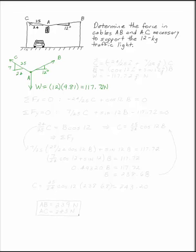In this case, we know all of the angles, so we can jump right into writing each of our forces in Cartesian form. The vector C is minus 24 over 25 in the I direction, plus 7 over 25 in the J direction times its magnitude C.